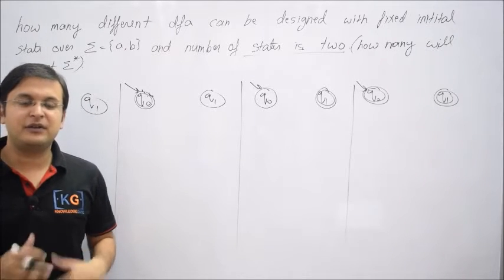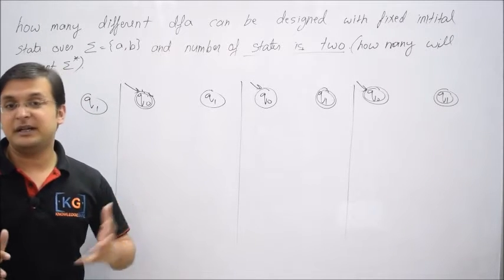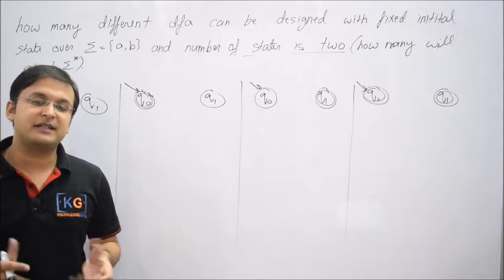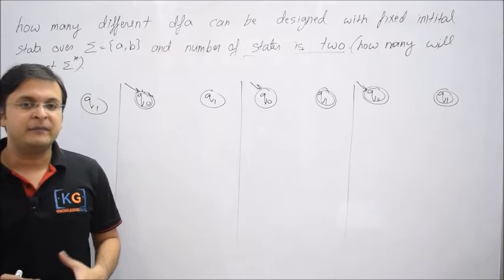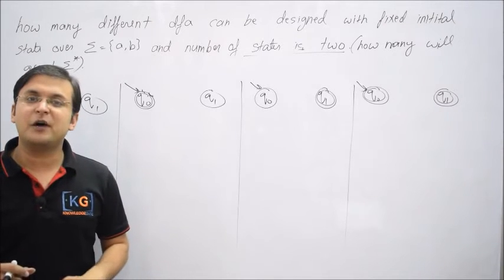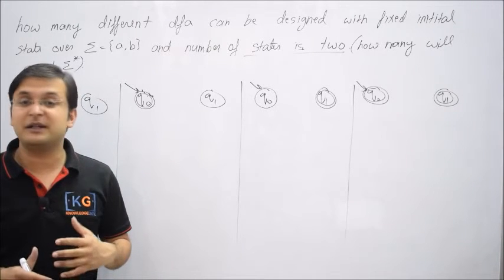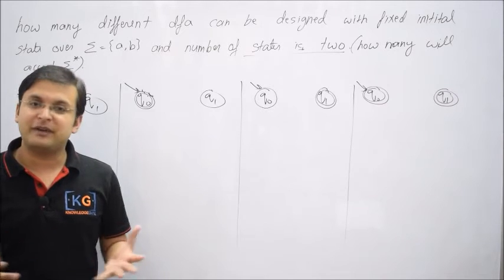In the previous video we discussed how many DFAs or combinations were there which were accepting universal language. Now in this video let's try the reverse logic and see out of total those 64 cases how many are accepting empty language or empty set.